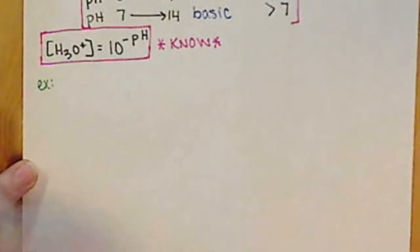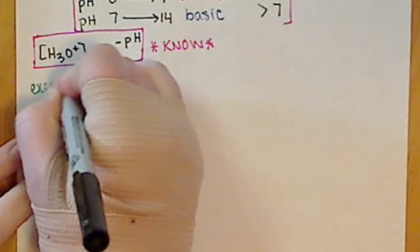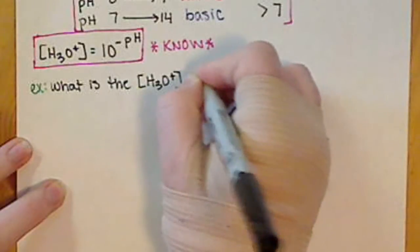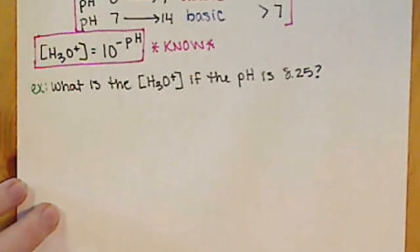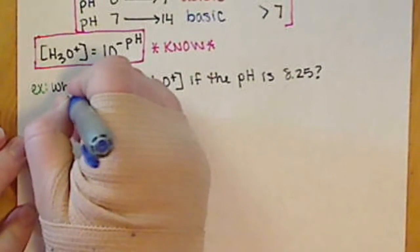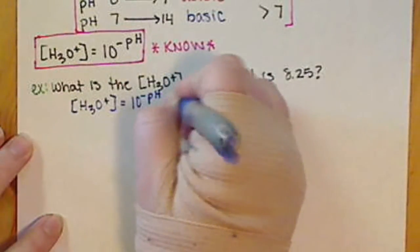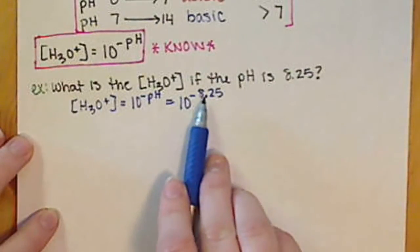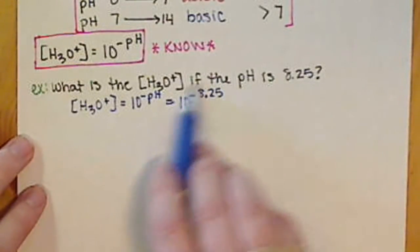Let's work an example using this second equation. What is the concentration of H₃O⁺ if we have a pH of 8.25? We follow our equation: concentration of H₃O⁺ equals 10 to the negative pH, so we have 10 to the negative 8.25. Having a decimal in your exponent is improper, so you cannot leave the value like this — it is not mathematically appropriate.